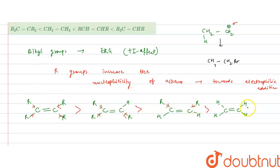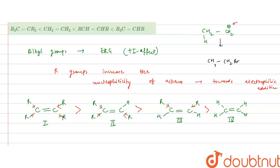So the maximum reactivity towards HBr belongs to the compound with the most R groups. This is the decreasing order, so the increasing order is the opposite. Numbering them: four has the least reactivity, then three, then two, then one — with compound one having maximum reactivity.